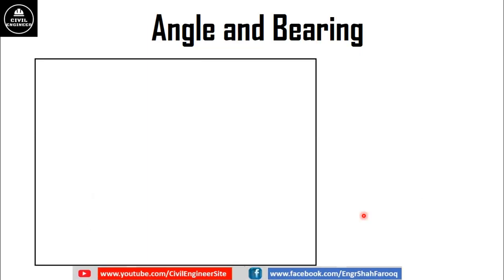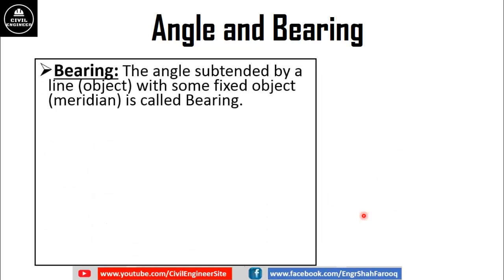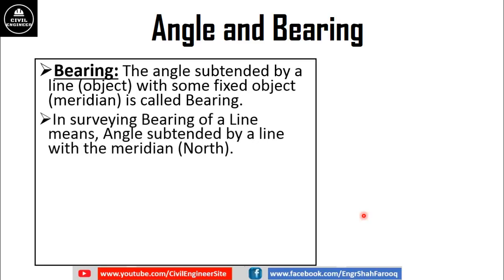Now, we will discuss what is bearing. Actually, bearing is a type of angle. The angle sustained by a line or an object with some fixed object, or you can say a meridian, is called bearing. In surveying, bearing of a line means the angle sustained by a line with the meridian or north.